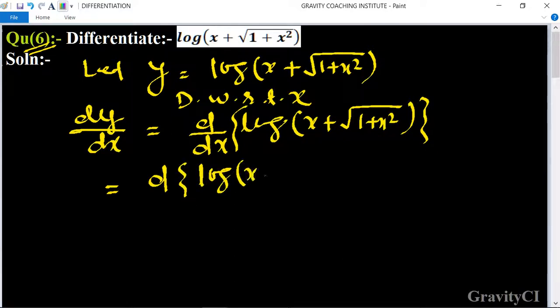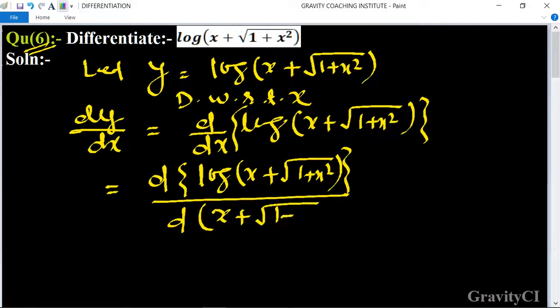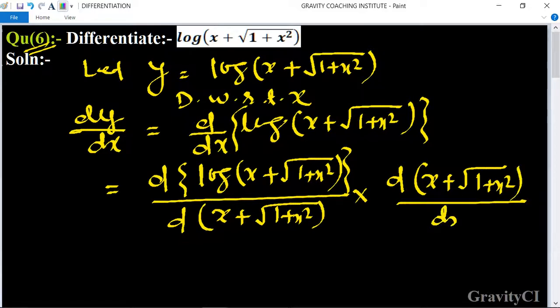Equals 1 over (x + √(1+x²)) multiplied by d/dx of (x + √(1+x²)).